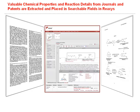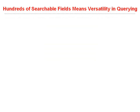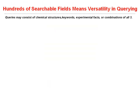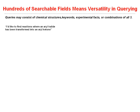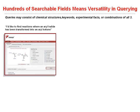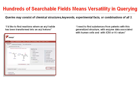Queries may consist of chemical structures, keywords, experimental facts, or combinations of all three — to help you find, for example, reactions where an aryl halide has been transformed into an aryl ketone, or to find substances from patents with a generalized structure and with enzyme data associated with human cells and with IC50 or KI values.